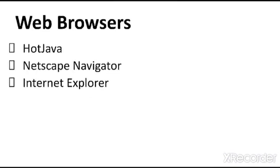In our previous session we have seen how Java is closely connected to the internet and World Wide Web. To run Java Applet programs embedded in an HTML document we require Java-enabled web browsers. Here are some of the web browsers which support Java language: HotJava by Sun Microsystems, Netscape Navigator by Netscape Communication Technology, and Internet Explorer by Microsoft. Nowadays most web browsers support Java language and have a built-in Java language interpreter.